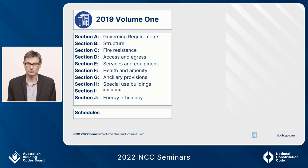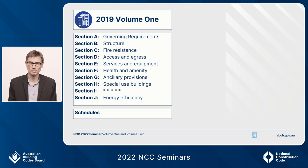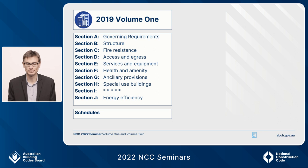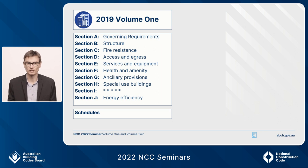Note on this slide that Section I has some asterisks — Section I is blank. It's been like this since 2014, which was when we took maintenance out of the code. We put those asterisks in as a placeholder so that Section J didn't suddenly become Section I. After the technical provisions and the Governing Requirements, you find the schedules, where the definitions, state and territory variations and things like that are found. So that's the 2019 Volume 1 high-level structure.